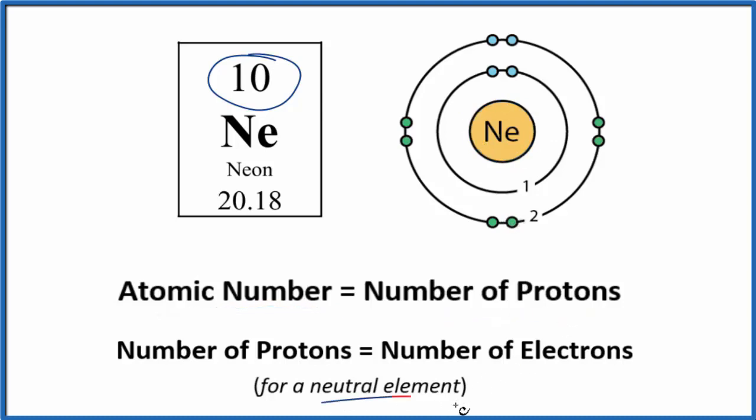For neutral elements, and all of the elements listed on the periodic table are listed as neutral, the number of protons equals the number of electrons. So if we have 10 protons in the nucleus of the neon atom, we have 10 electrons in the energy levels around it.